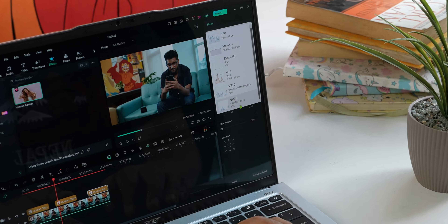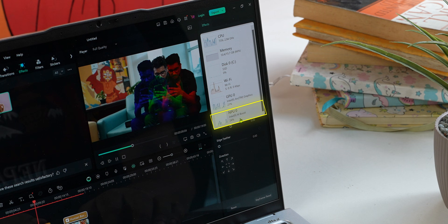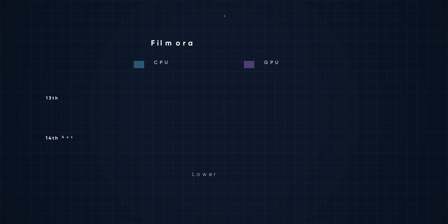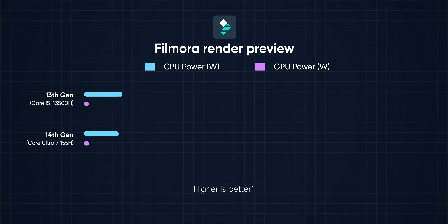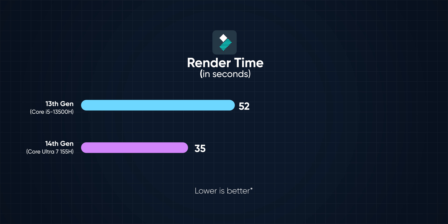Next, I tried editing a short video in Wondershare's Filmora by applying a couple of effects, and the neural processor proved its worth again. Weirdly enough, the CPU and GPU power consumption was marginally higher when previewing the clip on the timeline, but when I actually rendered the preview, the 14th-gen system had it all — lesser power consumption, lower CPU usage, and faster render time.